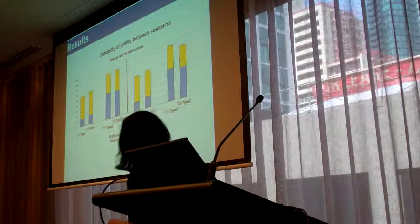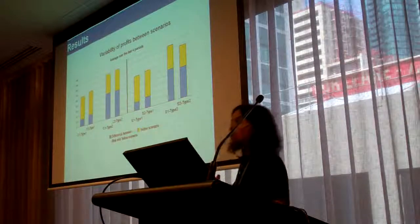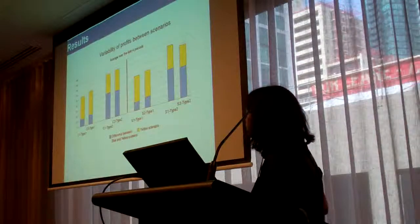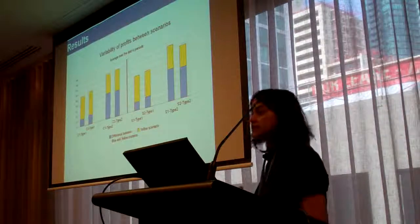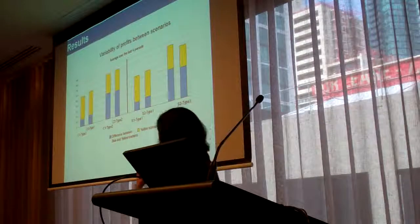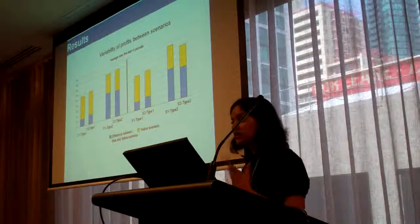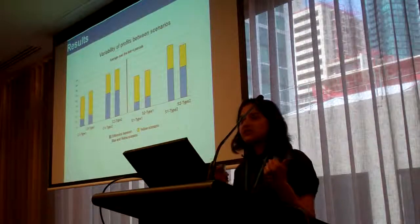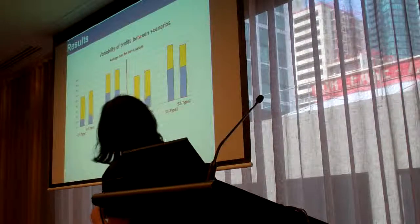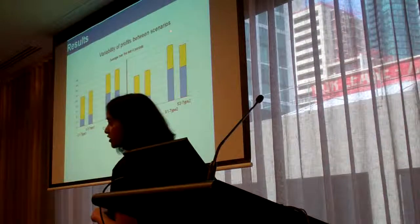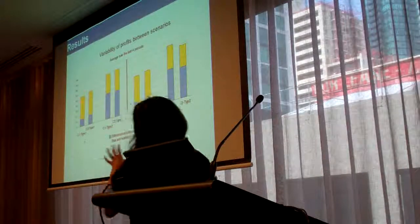The second result I want to talk about is the management of risk. When you move to a differentiated market, can you manage your risk better? To understand this, we need to think about different types, because one type is more tolerant to risk than the other. What we do is look at the variability of profits between the wet and dry scenarios, and we look at this across types.